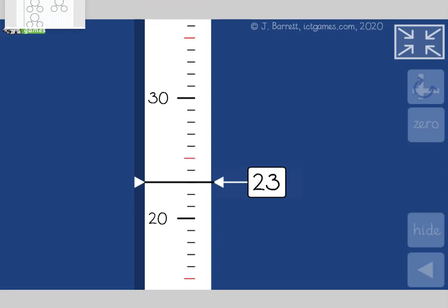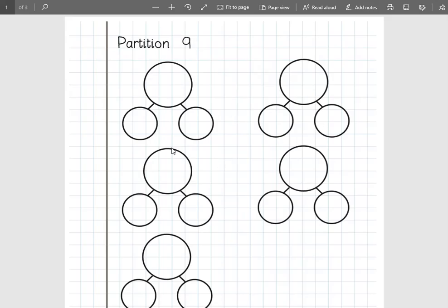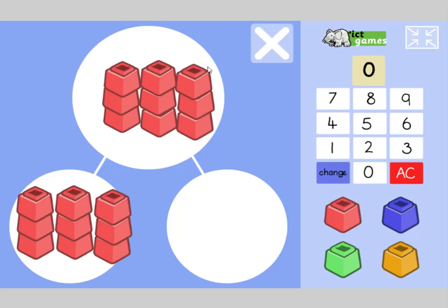If you have a look on your printout, you've got a job, the first job here is to partition nine. We're going to be using nine today. So you've got these part, part, part holes. So you're putting nine in the big ones, and we're partitioning that. I've got nine Unifix cubes here. Pause the video for me. And you need to work out all the ways of making nine.